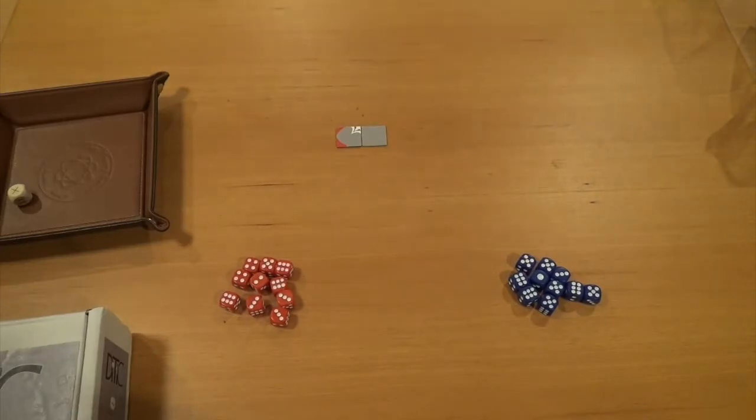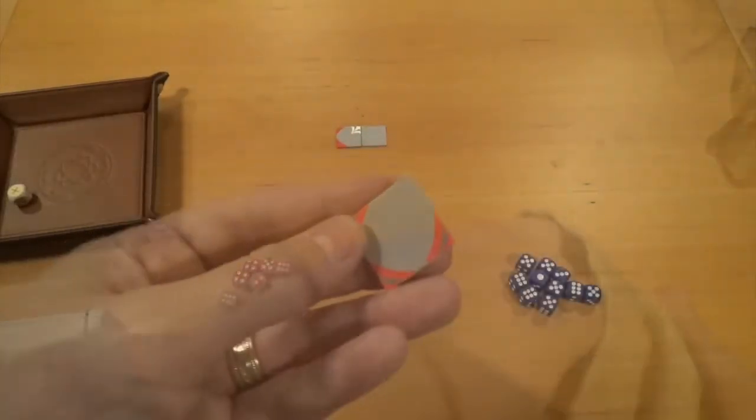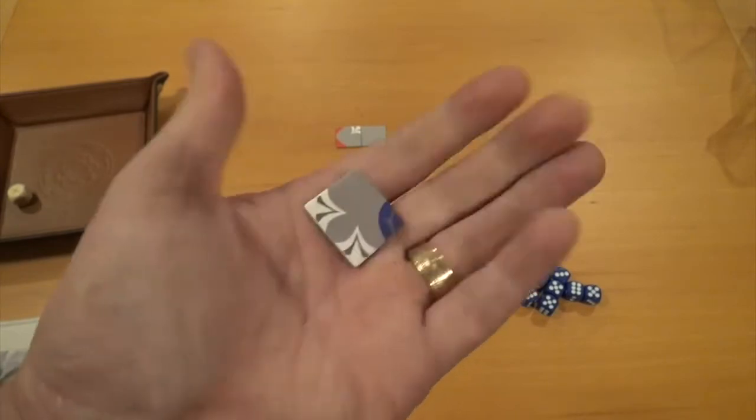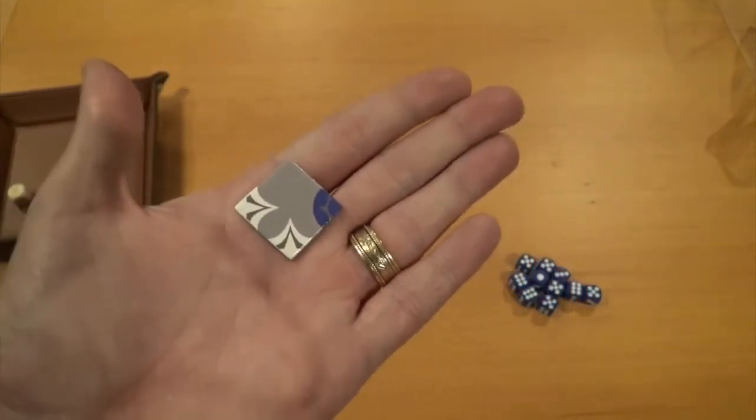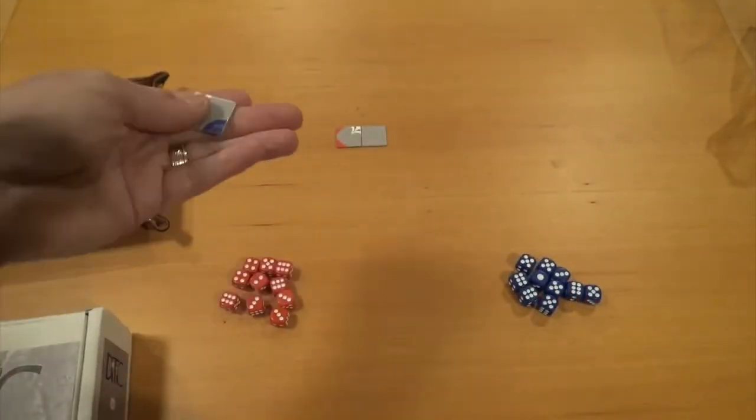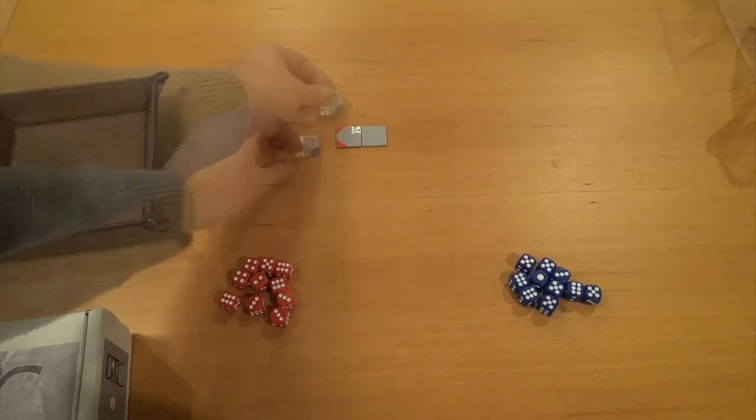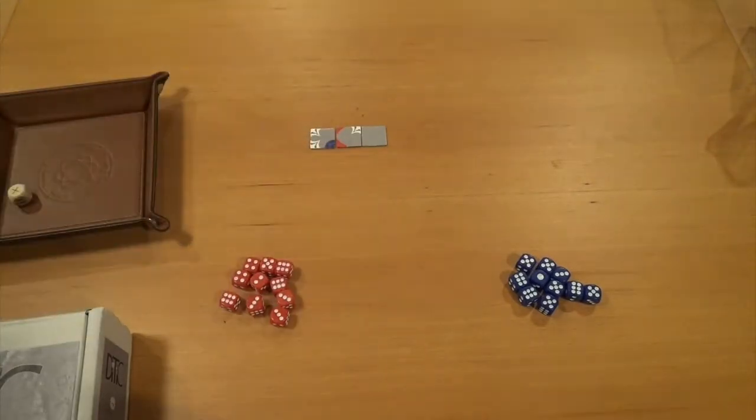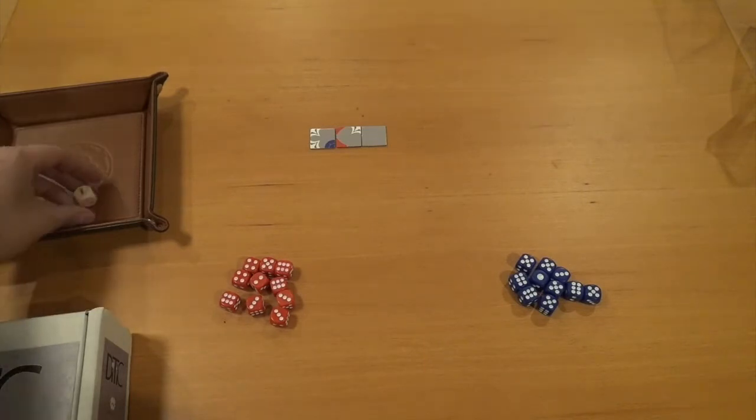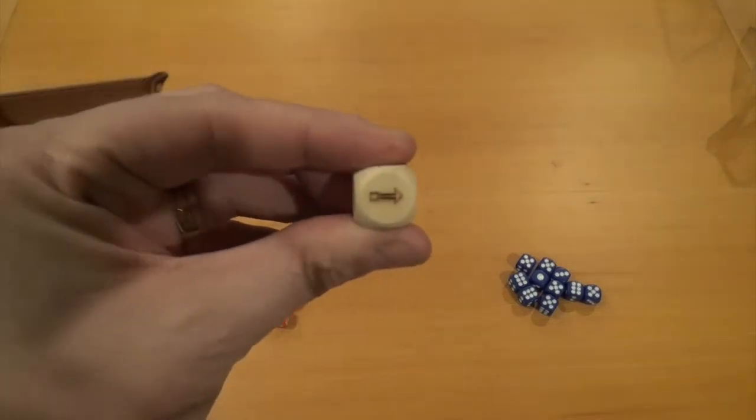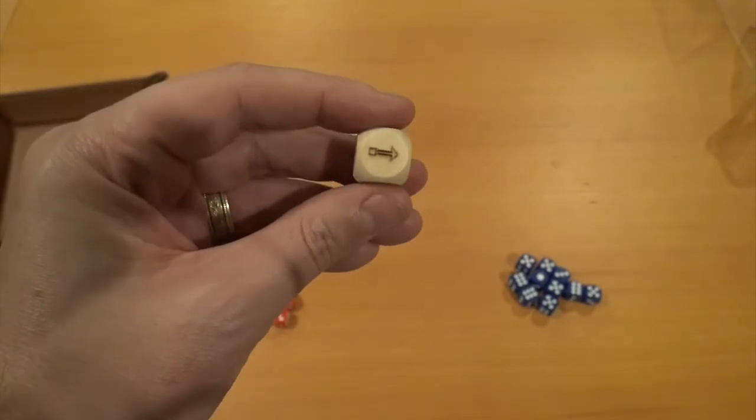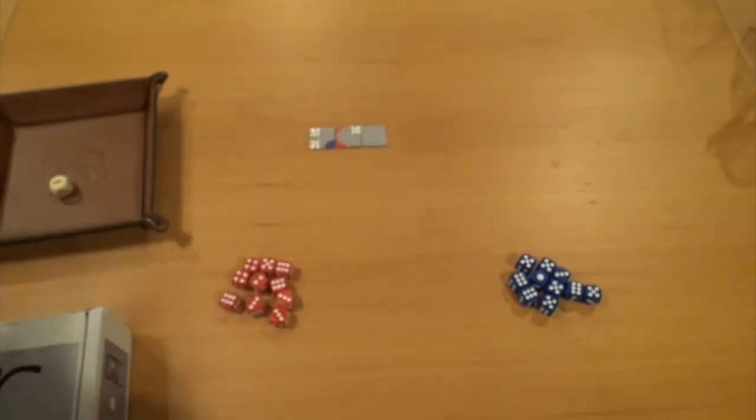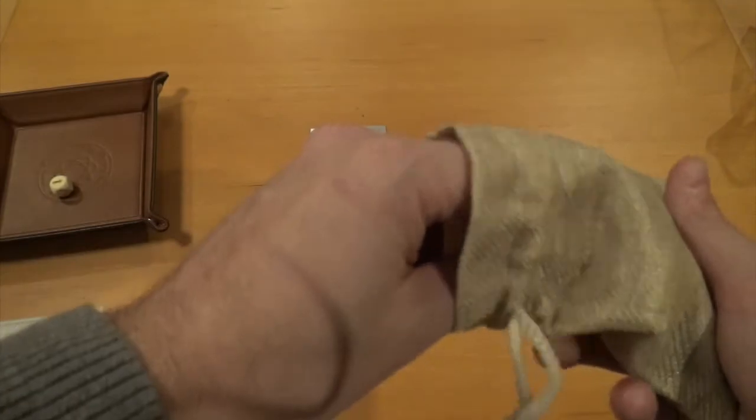And then we go to the blue player. They will do the same thing. They will draw a tile. And we'll see we have a lot of red, and a little bit of blue here. So, what I'm going to do is, I'm going to take it, and I'm going to place it like so. And then, again, I would get to roll the die. And this time, I got this symbol, which would allow me to move one die, but I have no dice out. And I promise, you're going to see how that works.